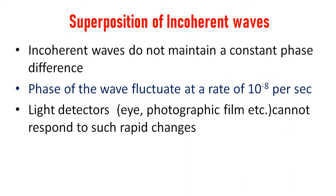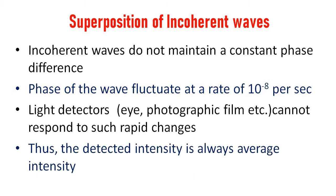This fluctuation is very fast. Light detectors — our eye is a light detector, and a photographic film is also another light detector — cannot respond to these types of rapid changes. That means we cannot see it or observe it through any photographic film. We are able to detect only the average value. Thus, the detected intensity is always the average intensity.